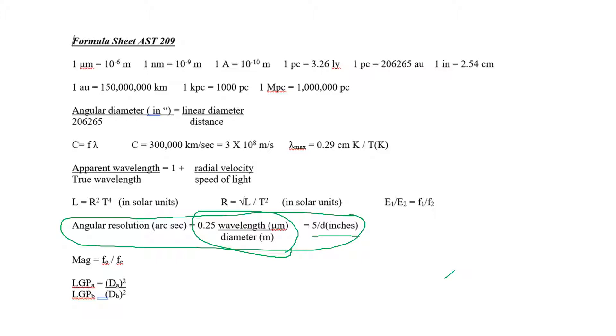0.25, which is a unit conversion, times the wavelength in micrometers divided by the diameter in meters. And the relationship between micrometers and meters is given here.